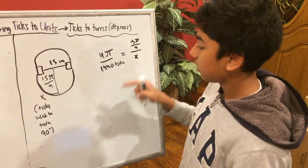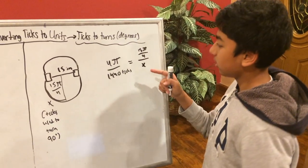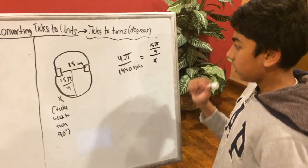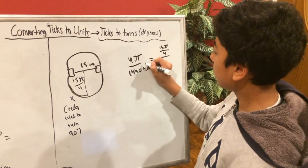As I said, x is the ticks used to turn 90 degrees. And so we just do the math.